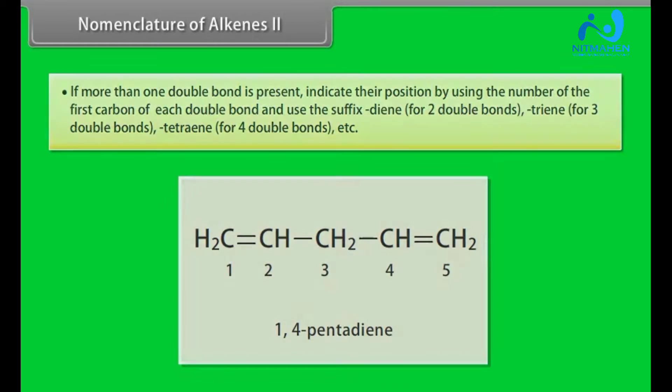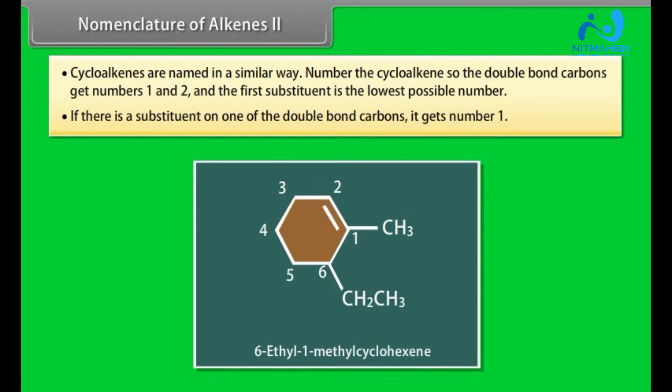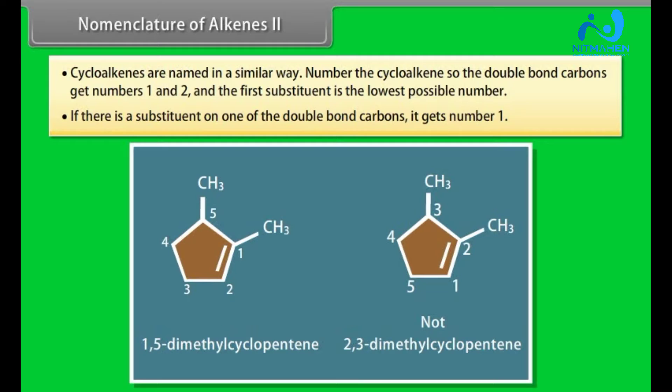Step 9: Cycloalkenes are named in a similar way. Number the cycloalkene so the double bond carbons get numbers 1 and 2 and the first substituent is the lowest possible number. If there is a substituent on one of the double bond carbon, it gets number 1. 6-ethyl-1-methyl-cyclohexene. Look at this compound. It is named as 1,5-dimethyl-cyclopentene and not 2,3-dimethyl-cyclopentene.